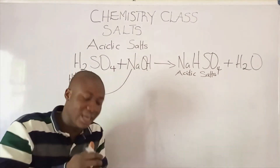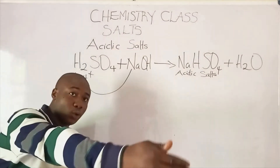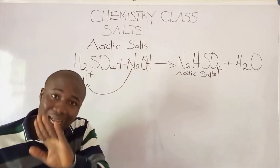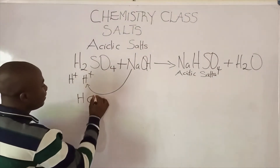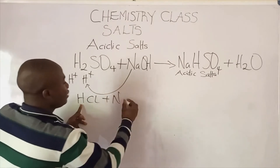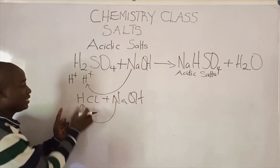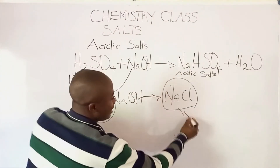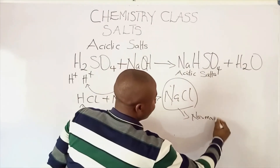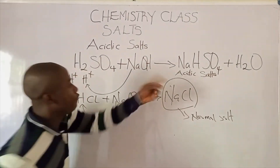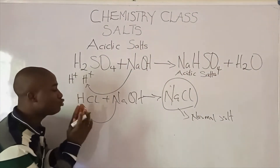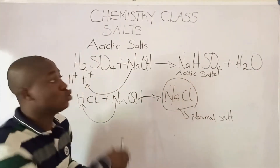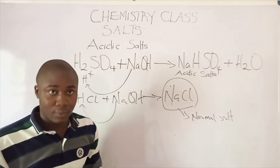That is why monobasic acids are not used to form acidic salts. If it was a monobasic acid with just one hydrogen ion reacting with sodium hydroxide, the sodium would completely replace that hydrogen, giving us NaCl, which is called a normal salt. So for an acidic salt to be formed, the hydrogen ion will not be completely replaced by the metallic ion — in this case sodium — or the ammonium radical.